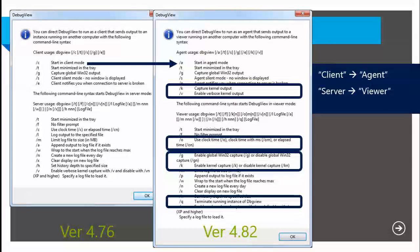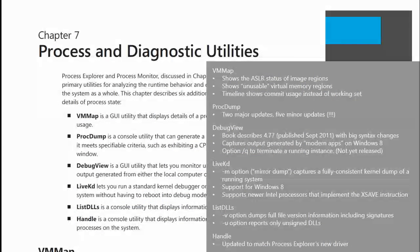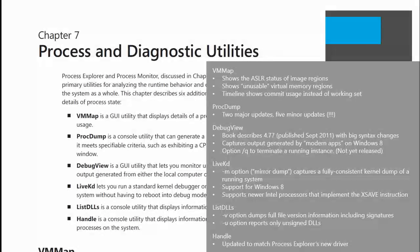LiveKD has a '-m' option. LiveKD allows you to get a snapshot of kernel-mode memory and open it in the debugger to see what's going on in kernel memory. The old '-o' option would capture a dump file while the system continued to run, so you wouldn't necessarily have a consistent view. With the new '-m' option, they've taken advantage of OS features to capture a true snapshot — the data is from a single, consistent point in time.